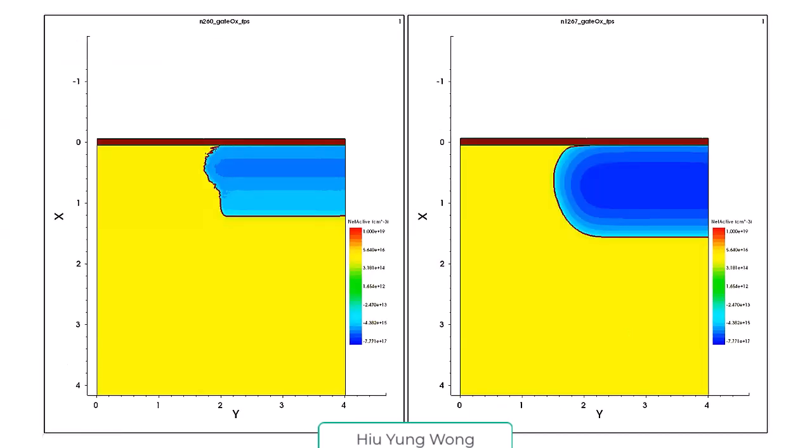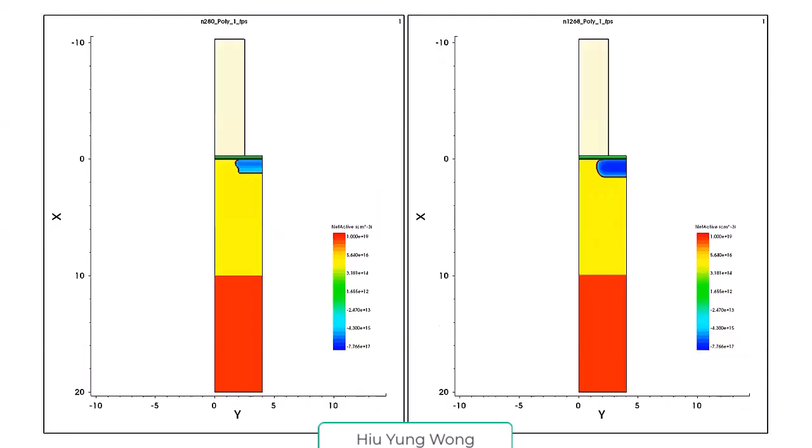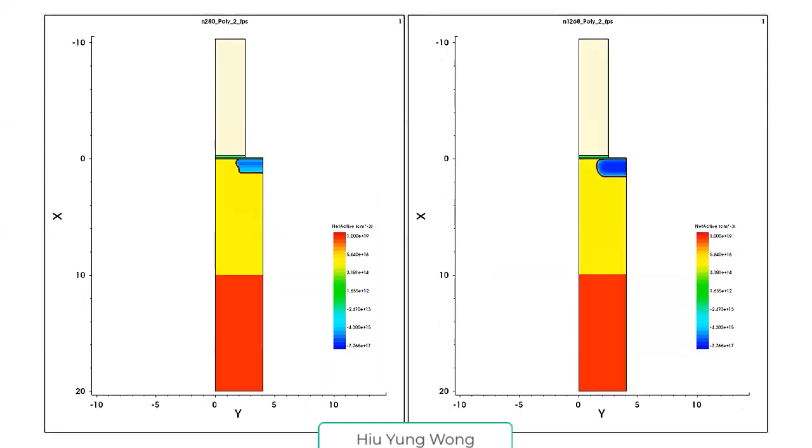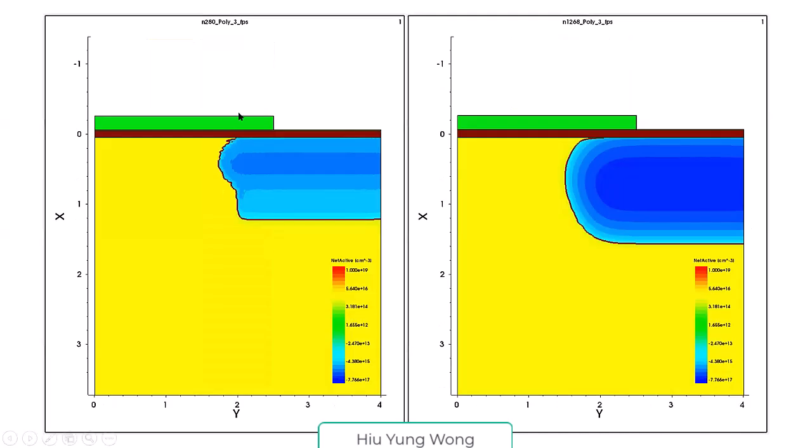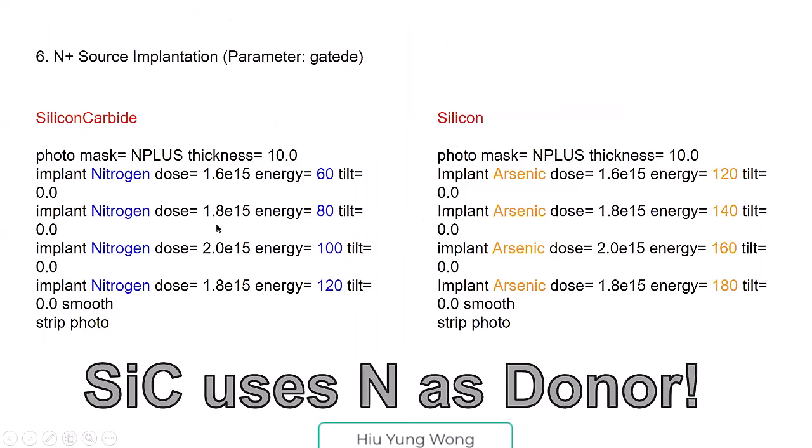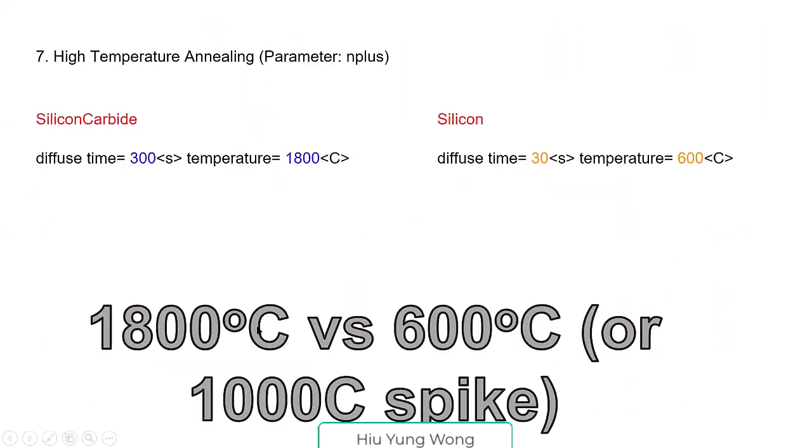This is the junction, this forms the body. Then we form the poly gates—not very important, basically we just deposit the gate. Here is the gate, here is the source, and then the body. Then again we do the nitrogen implantation. We open it so that we can implant to the center, and again 1800. This is more than the melting point of silicon, but we need this for silicon carbide.